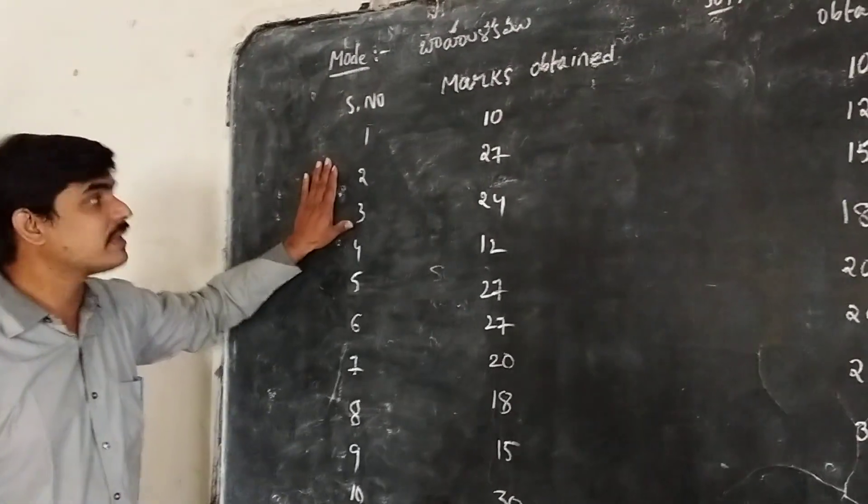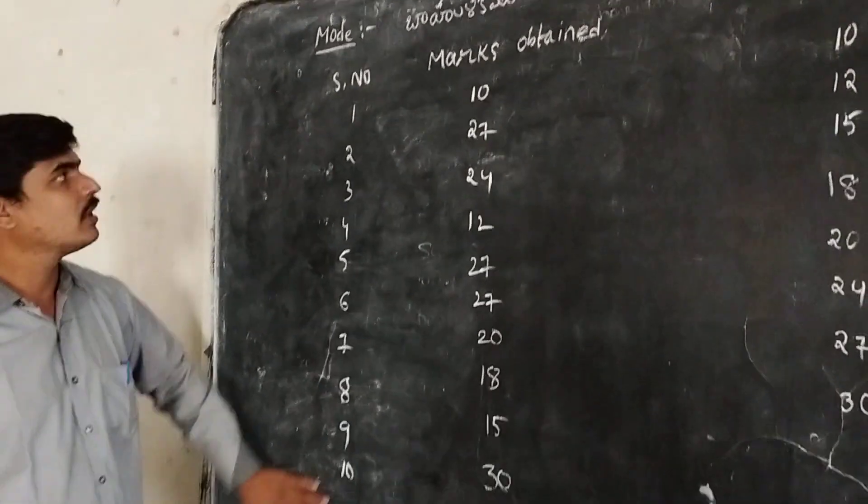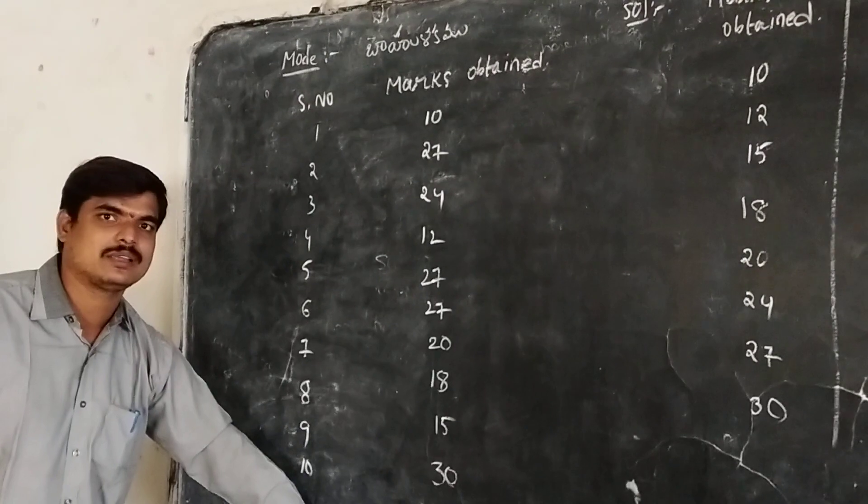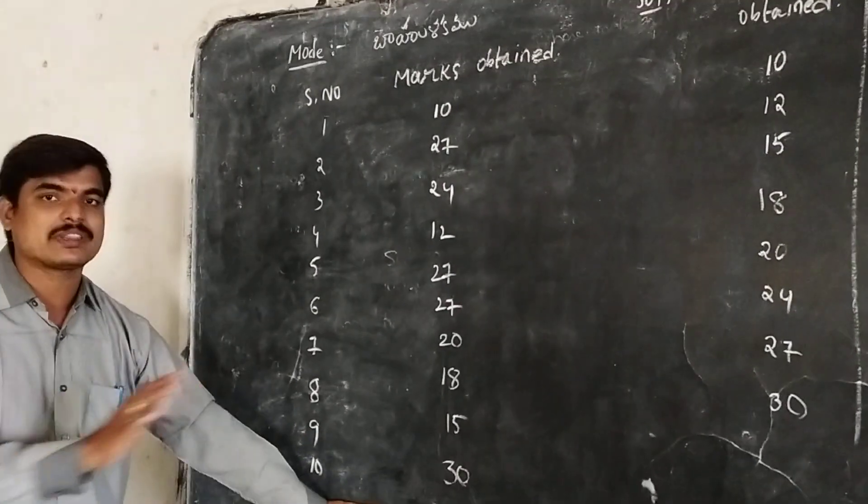This is the given problem. The series numbers are 1 to 10, and the marks obtained is given like this. We need to find out the mode for the given data.